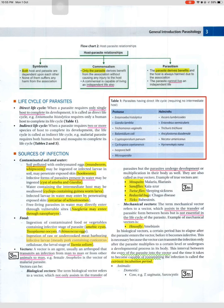Vectors: a vector is an agent, usually an arthropod, that transmits an infection from man to man or from other animals to man — for example, the female Anopheles is the vector of the malarial parasite. Vectors can be biological vectors — the term biological vector refers to a vector which not only assists in the transfer of the parasite between hosts but in which the parasite also undergoes development or multiplication.